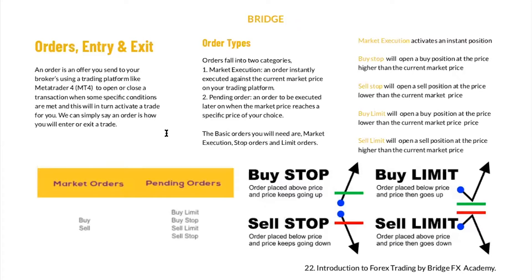Simply put, an order is how you will enter or exit a trade. Your entry will take you in, your take profit will take you out in profit, and your stop loss will take you out in loss. An order is how you tell your trading app how you want to enter into the markets. So let's go into order types.